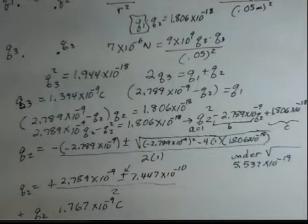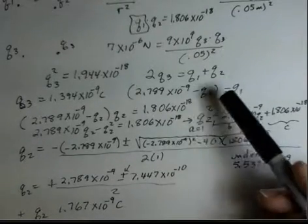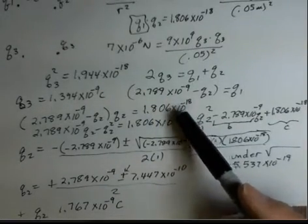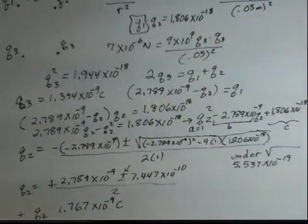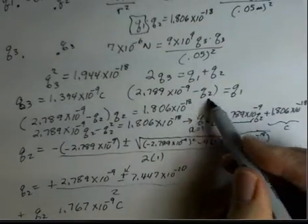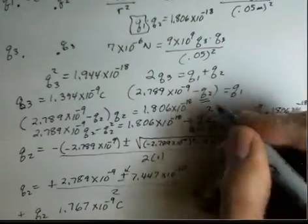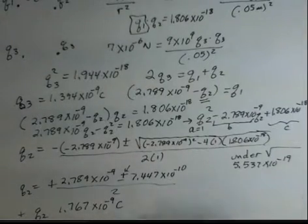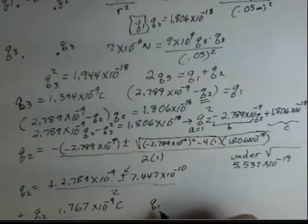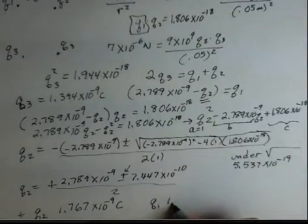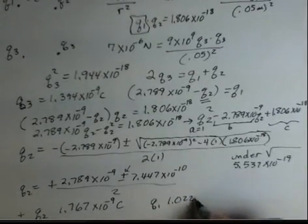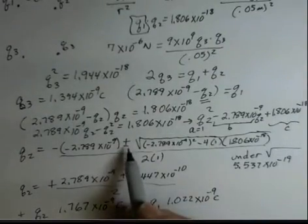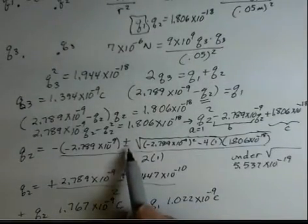So, I'm in standard units and I'll have coulombs for the force. So, that's Q2. And, now we can find Q1. Q1 is 2.789 times 10 to the minus 9 minus Q2. So, replace the Q2 up here with the number we've just achieved from the quadratic formula. And, I get a Q1 value of 1.022 times 10 to the minus 9 coulombs. That's one calculation of the quadratic using quadratic formula.